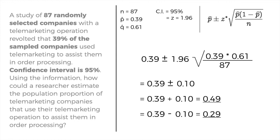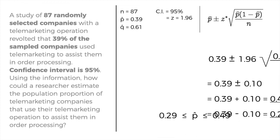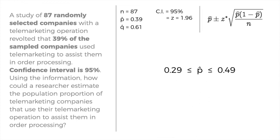Writing the final answer: 0.29 ≤ P-hat ≤ 0.49. Interpreting this result: there is 95% confidence that the population proportion of telemarketing firms that use their operations to assist in order processing is somewhere between 0.29 and 0.49.